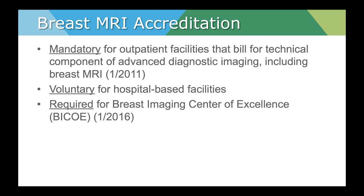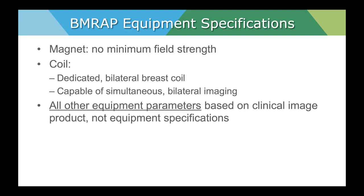If your facility wants to become a breast imaging center of excellence, they are required to maintain accreditation for all modalities — MRI, ultrasound, mammography, and stereotactic biopsy. Even though some facilities may choose not to become accredited, it's useful to look at these minimum requirements. There is no minimum field strength. While most research on breast MRI is done at 1.5 Tesla, it can be done on 1.0T and open magnets. However, the coil must be a dedicated bilateral breast coil capable of simultaneous parallel imaging.